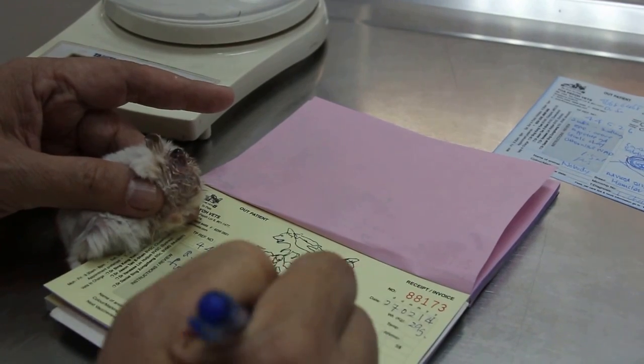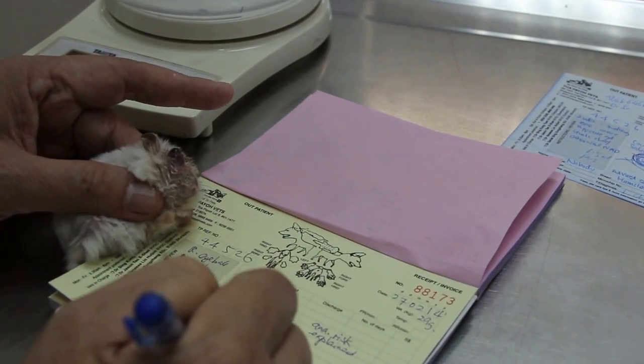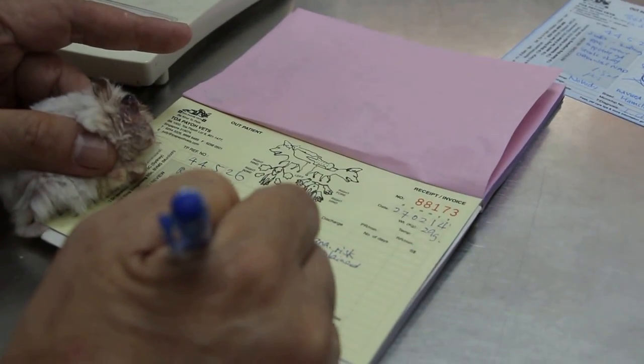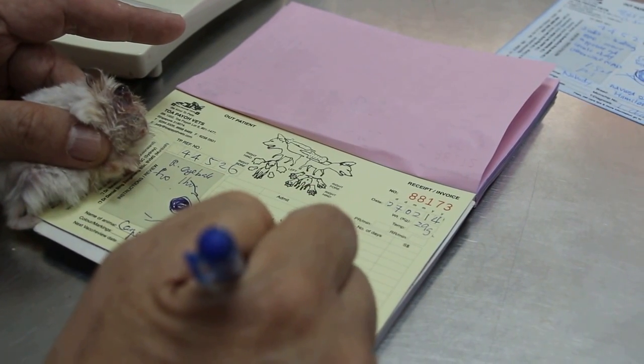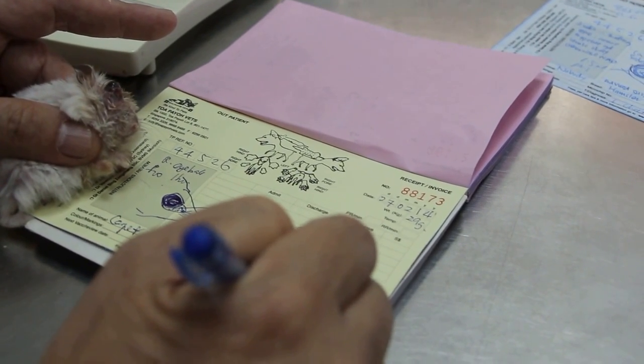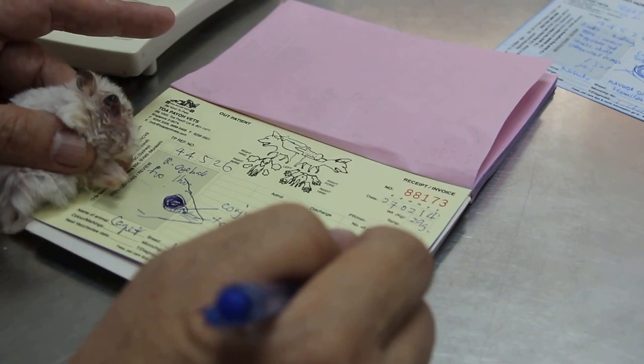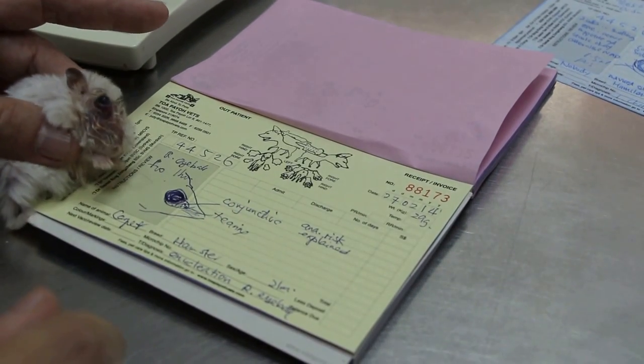So anesthetic risk is high. And the surgery is called enucleation. Enucleation of the right eyeball. So you will stay here for one or two days. Okay.